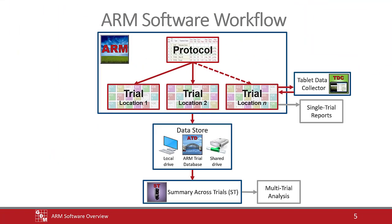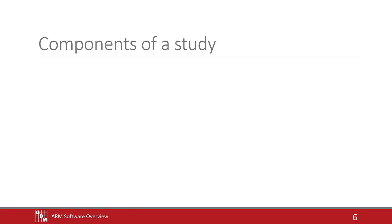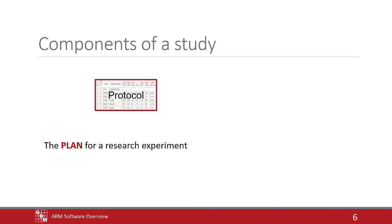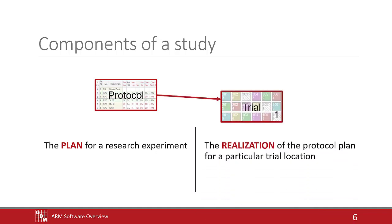Taking a closer look at ARM protocols and trials: a study has two essential components. The first component is a protocol, the plan for an experiment — essentially a template containing the design and instructions for trials. The second component is a trial, the realization of the plan. A trial is at one location and is saved separate from the original protocol.